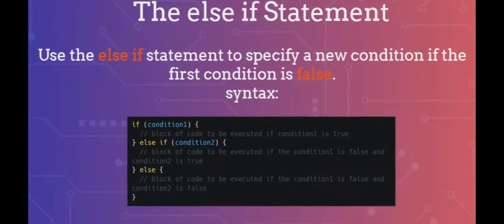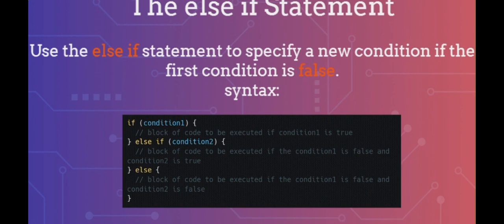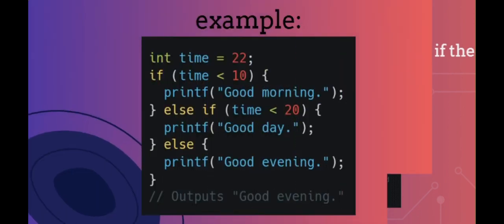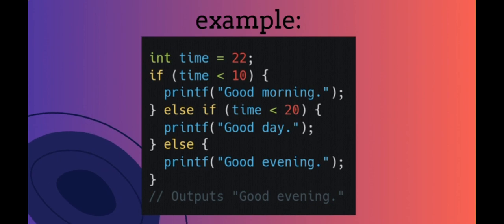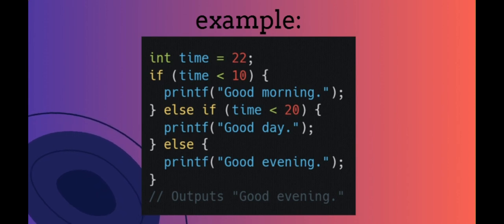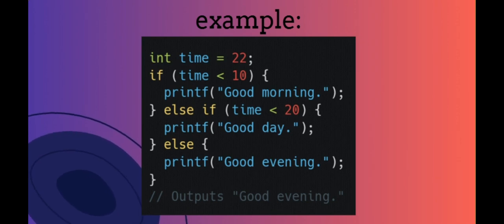The else if statement. Use the else if statement to specify a new condition if the first condition is false. And this is the else if syntax. In this example, time 22 is greater than 10, so the first condition is false. The next condition in the else if statement is also false, so we move on to the else condition — since condition 1 and condition 2 are both false — and print to the screen "good evening". However, if the time was 14, our program would print "good day".